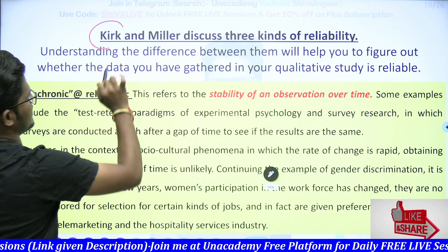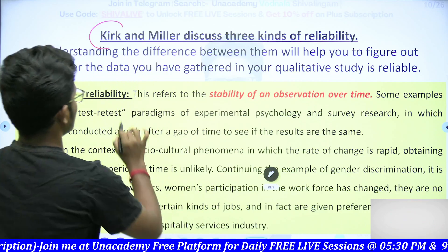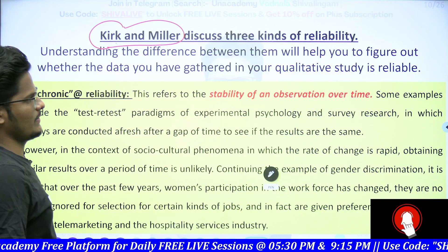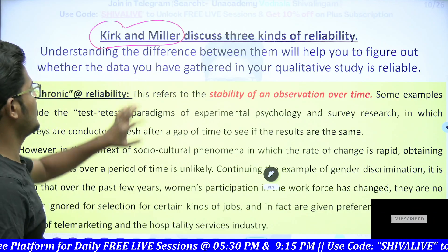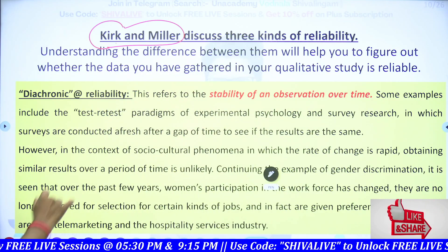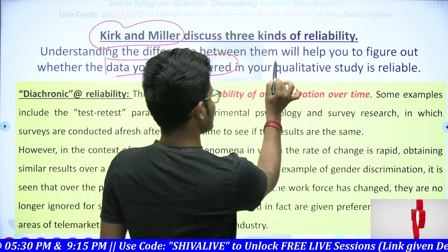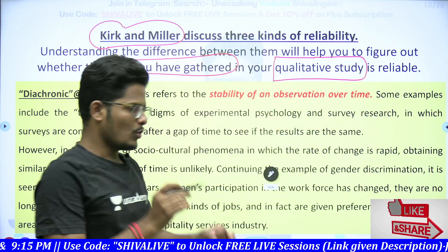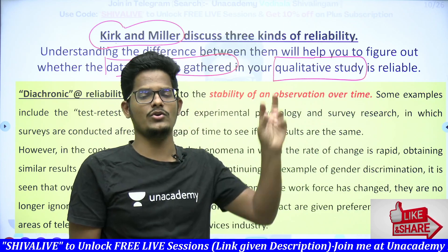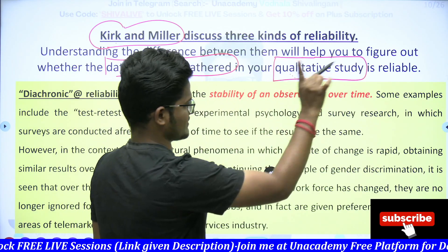Kirk and Miller has discussed three kinds of reliability, which was asked in the 2021 examination. The author name is Kirk and Miller — please remember that. These three kinds of reliability serve the purpose of helping you figure out whether the data you have gathered in your qualitative study is sufficiently reliable or not. This type of reliability is useful in qualitative study only, not quantitative study. To know whether your collected data is reliable, you perform these three types of reliability tests.